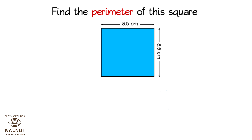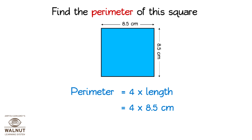Find the perimeter of this square. Let us use the formula. Perimeter of a square is 4 into length. We know what the length is, so let us put that value in. Then we multiply: 4 into 8.5 cm. We get the perimeter: 34 cm.